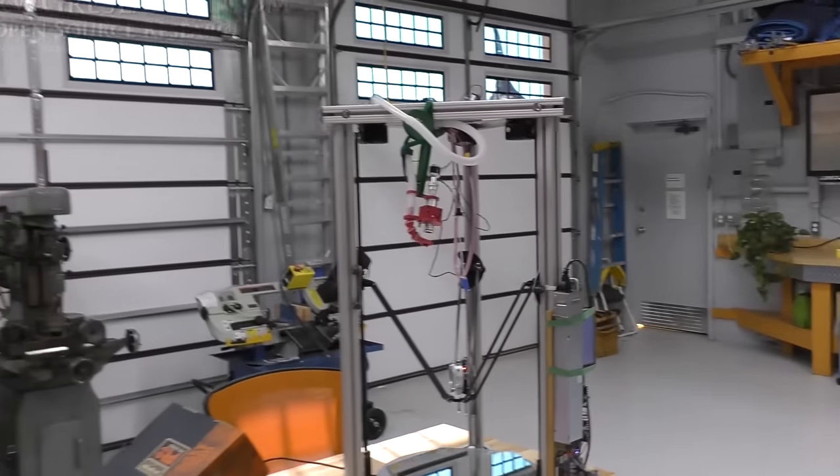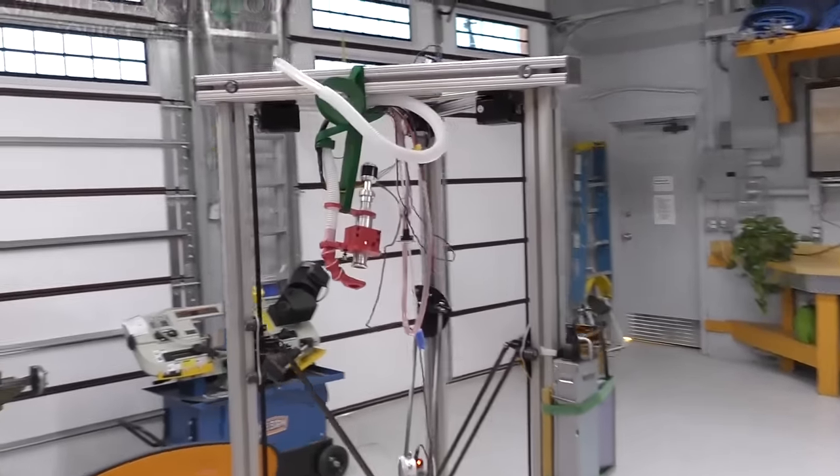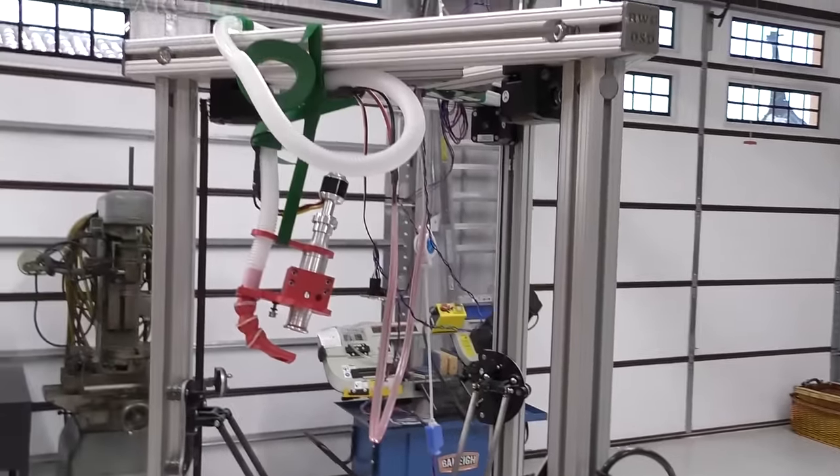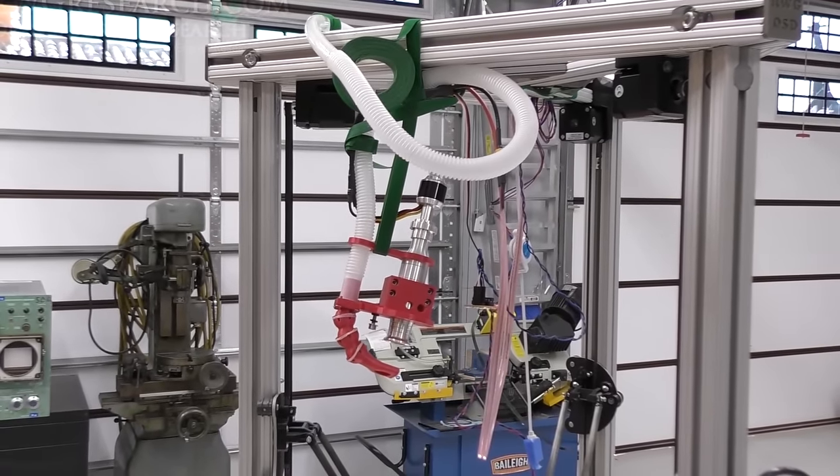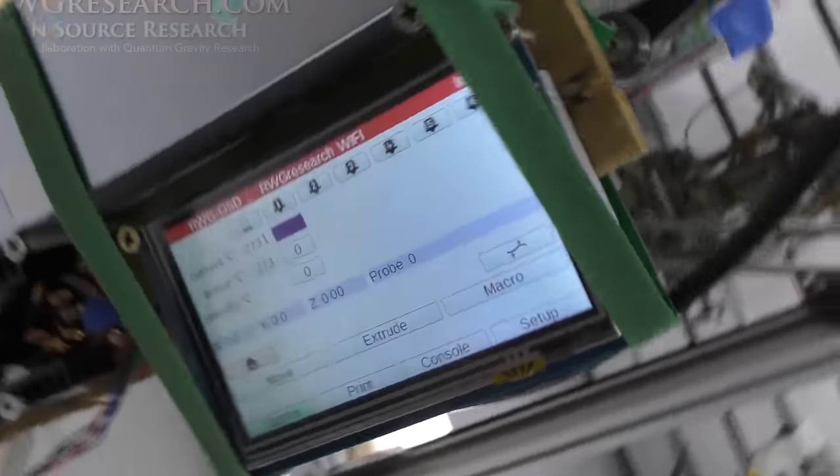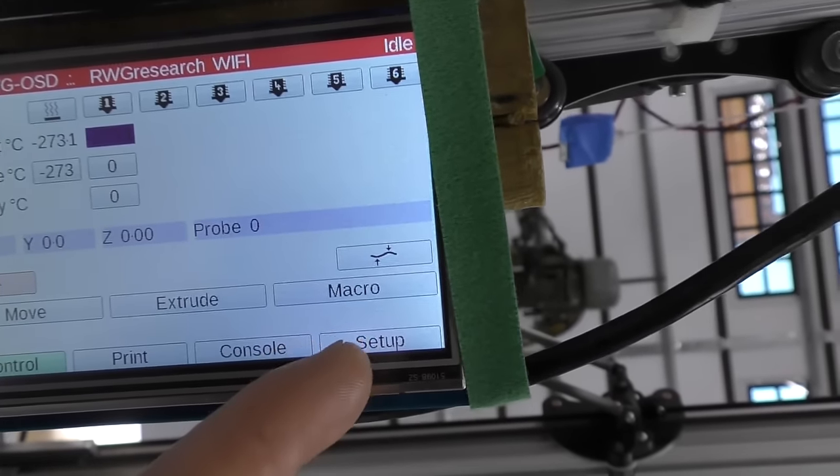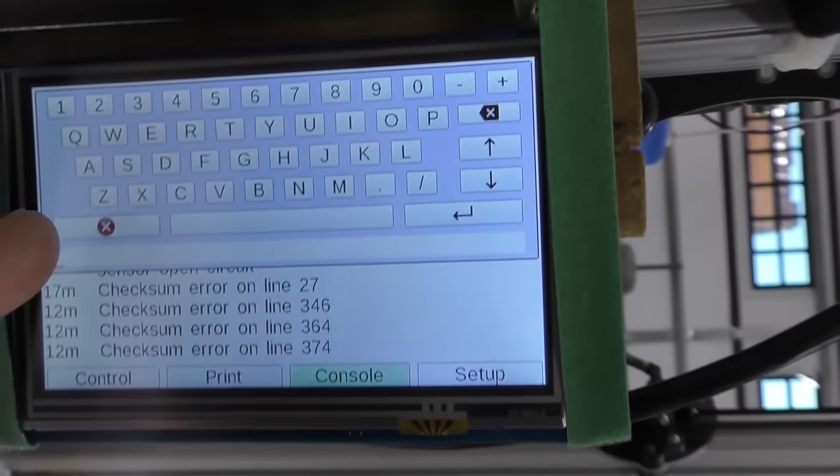The command is M280, and then the P parameter number is the actual heater channel, which is 6, and then the last bit is the milliseconds. So I can actually type it in here.